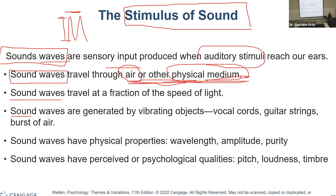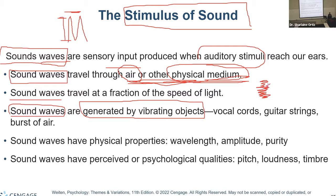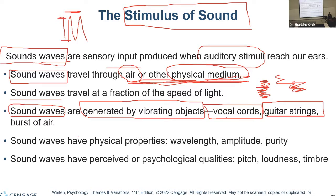Sound waves occur because they are generated by vibrating objects — such as a vocal cord or guitar strings. Just like the waves of light, they have the physical properties of wavelength, amplitude, and purity.